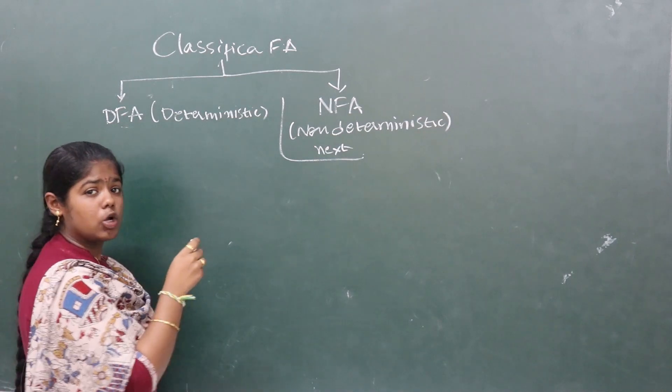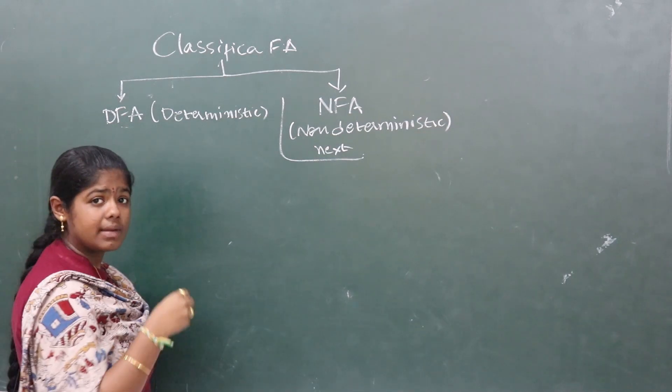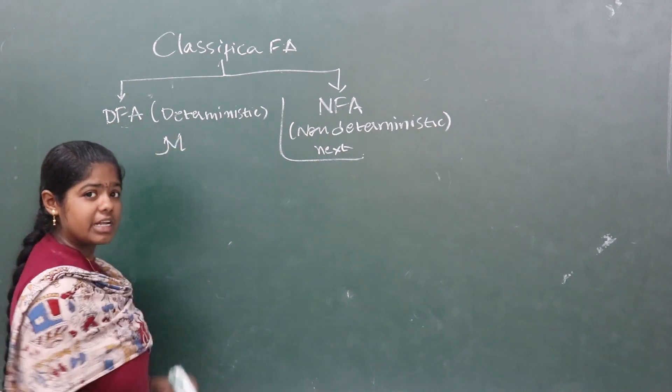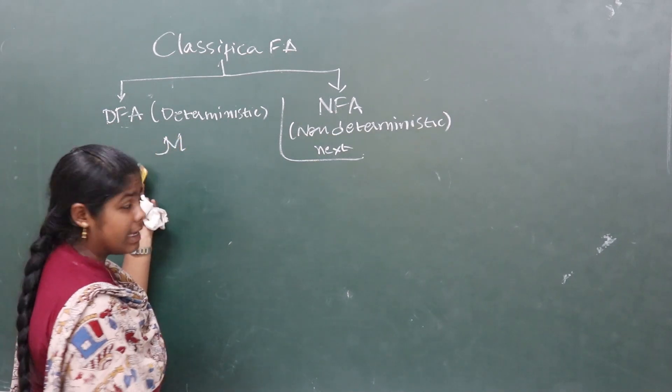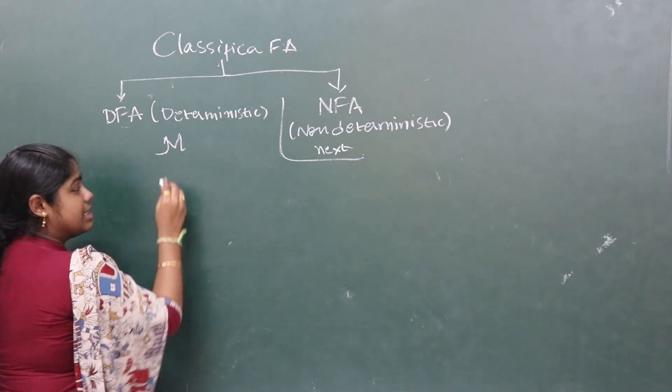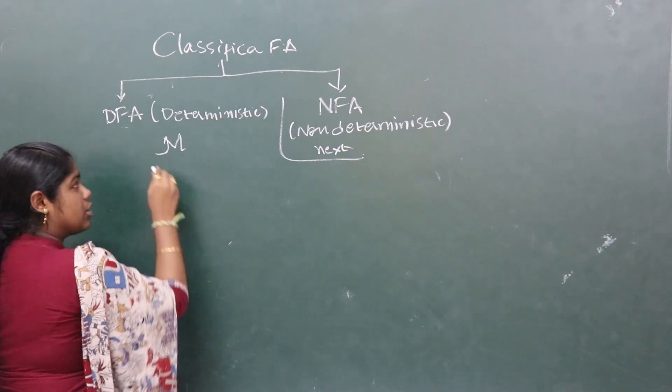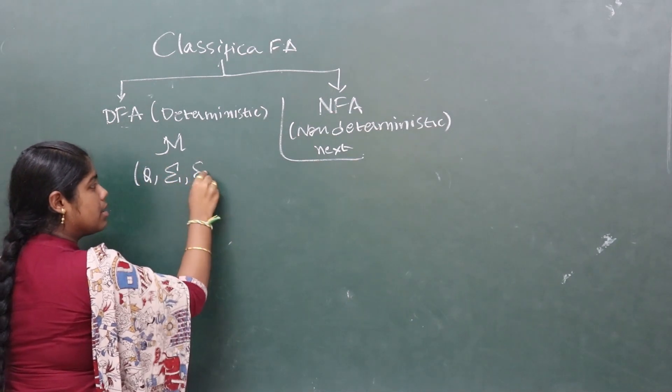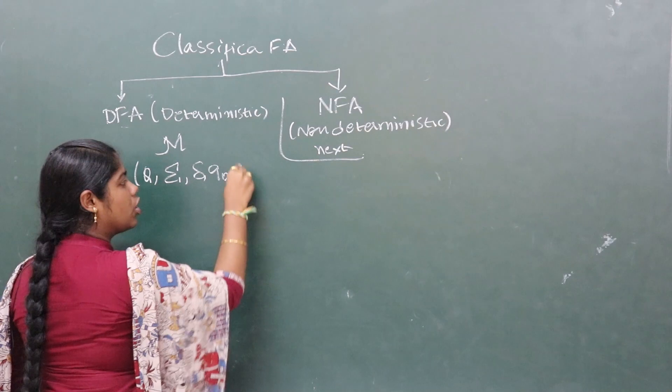Now, deterministic finite automata. Let us define the DFA. A DFA consists of five tuples: Q, sigma, delta, Q0, and F.